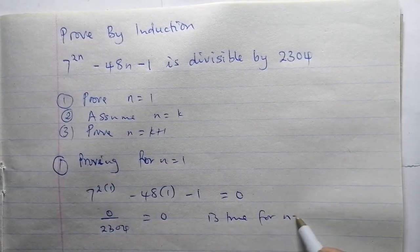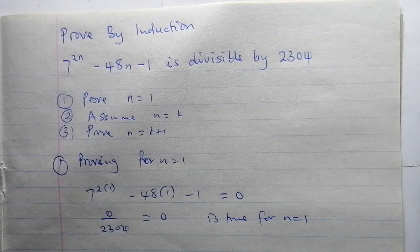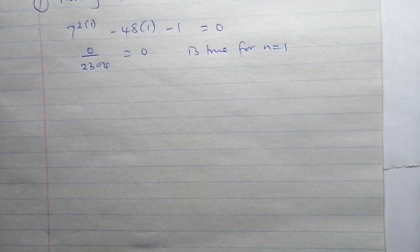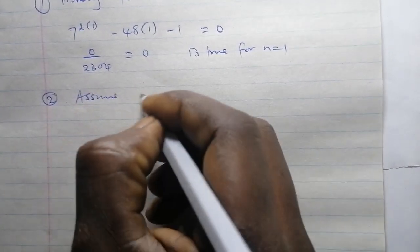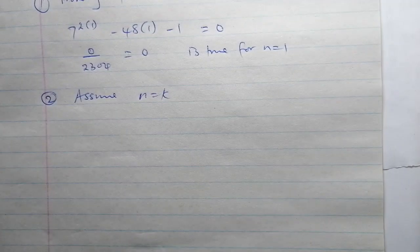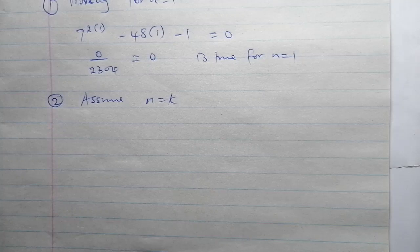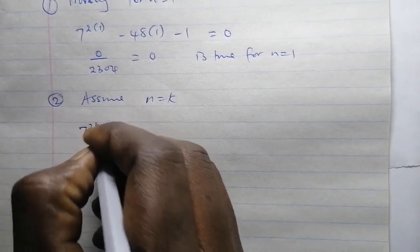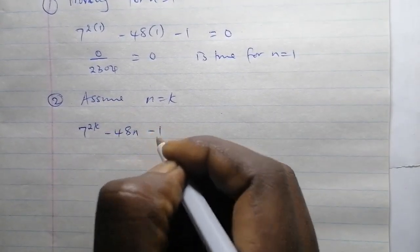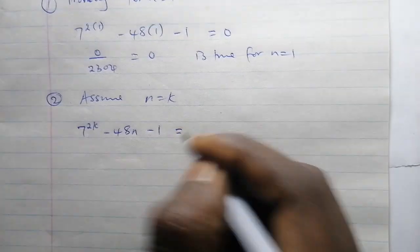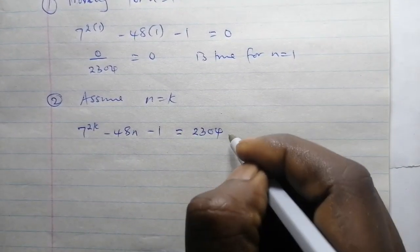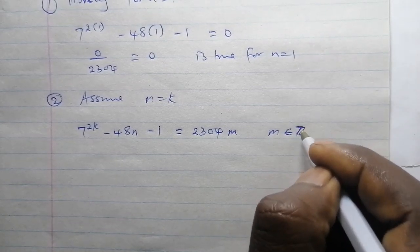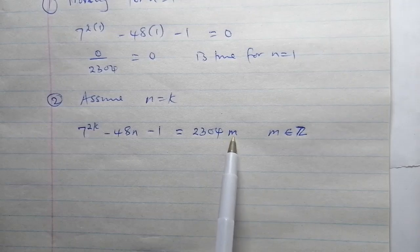Stage 2: we assume n equals k. We substitute k into our expression, which becomes 7 to the power 2k minus 48k minus 1. We say this equals 2304m, where m is an element of the integers. If this expression equals 2304 multiplied by m, it simply means that it is divisible by 2304.